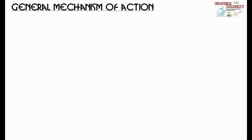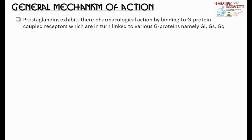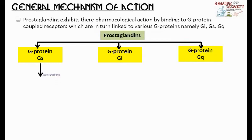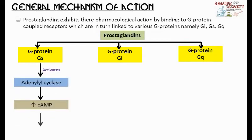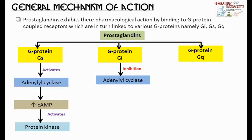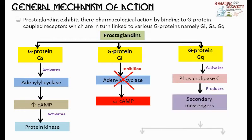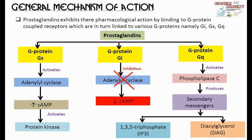Now coming to the general mechanism of prostaglandins. Prostaglandins exhibit their pharmacological action by binding to G-protein coupled receptors, which are linked to various G-proteins, namely Gi, Gs, and Gq. When prostaglandin binds to the Gs receptor, it leads to the activation of adenyl cyclase, which increases the levels of cyclic AMP in the cell. This cyclic AMP activates various protein kinases which regulate the functioning of various cellular proteins. When prostaglandins bind to the Gi receptor, it causes inhibition of adenyl cyclase, decreasing the level of cyclic AMP. In the case of the Gq receptor, it causes activation of the membrane-bound enzyme phospholipase C, which produces two secondary messengers: inositol 1,4,5-triphosphate (IP3) and diacylglycerol (DAG).